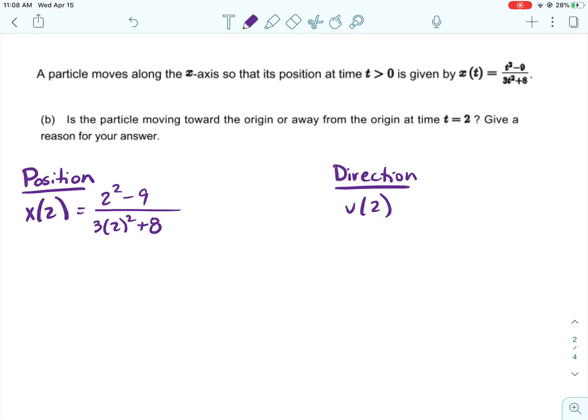Alright, so this is not hard. We just take for x of 2, we just take 2 and we plug it in for our t. Now this is meant to be a non-calculator question. And so on a non-calculator question, you really just wouldn't want to write down what this is, either positive or negative. You can figure that out super fast. But because we can use a calculator, we can simplify it down.